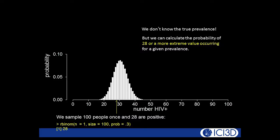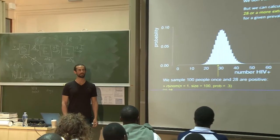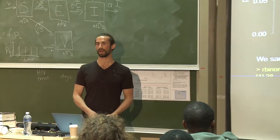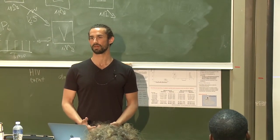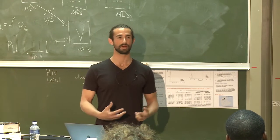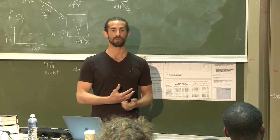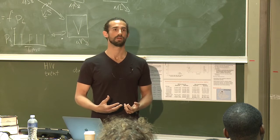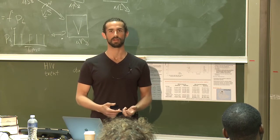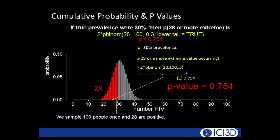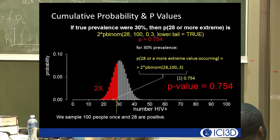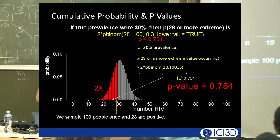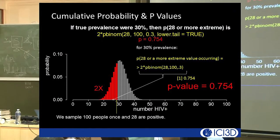We don't know the true prevalence, but we can calculate the probability of 28 or a more extreme number of individuals testing positive, given a hypothesized prevalence. Imagine you want to know the prevalence of a city — maybe Cape Town — and you haven't done the experiment yet. You're in a room with six people who all think they know the prevalence based on expert opinion. One person says the prevalence is 30%, and they happen to be right, but at this point you don't know that. If it really is 30%, we can calculate the probability of getting 28, 27, 26, or anything further from the expected value of 30 by chance alone.